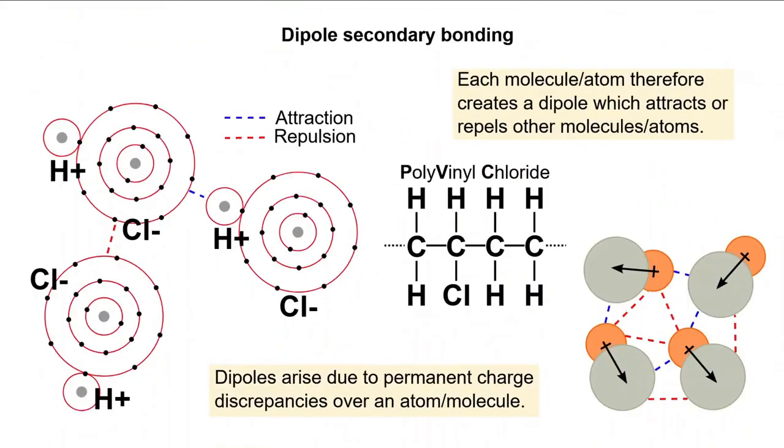First off, we have dipole secondary bonding. This bond type occurs as dipoles arise in a molecule comprised of two atoms with equal and opposite electrical charges. Each molecule therefore forms a dipole that attracts other molecules, as I've shown here with the hydrogen bonded to chlorine.